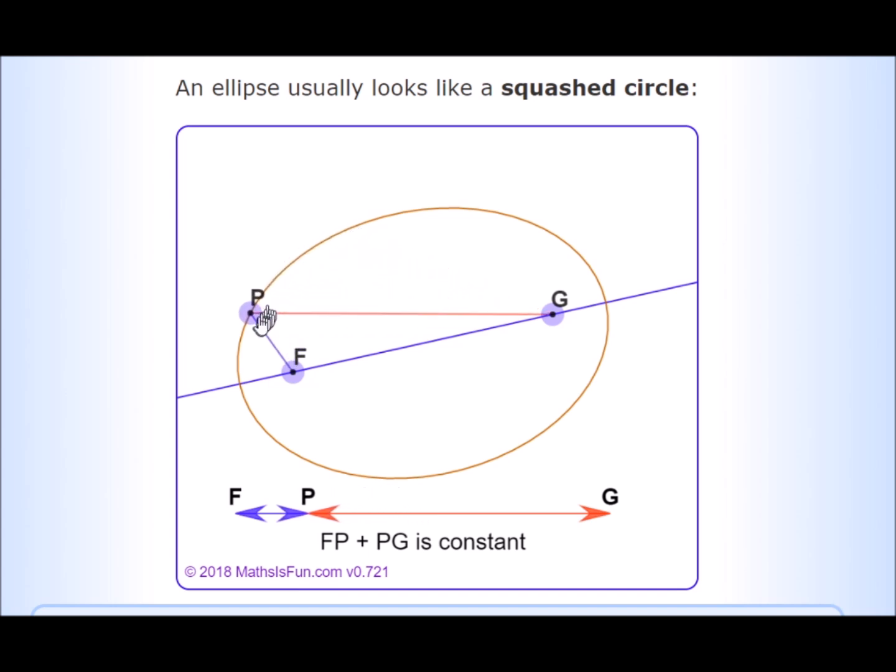An ellipse is a closed curve consisting of points whose distances from each of two fixed points all add up to the same value.